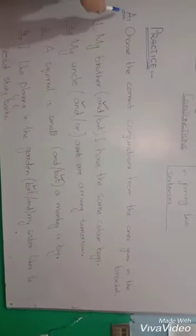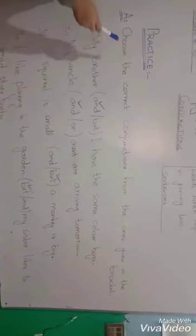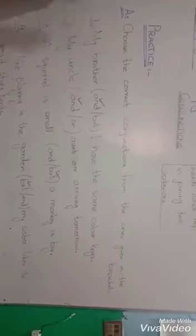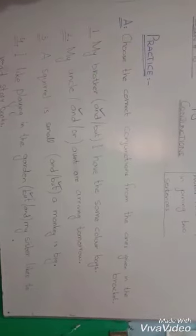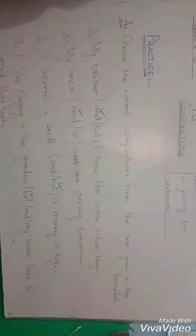Students, look at this exercise number 8: choose the correct conjunction from the ones given in the bracket. You have given sentences and you have given two conjunction words. My brother and I have the same colored bag.